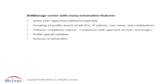Automatic grouping of profiles is a very important feature that allows you to view Bell Manage profiles based on your organizational structure. For example, you can do automatic grouping based on Active Directory OUs, IP subnet addresses, user names if you have a certain naming structure, or combinations of any of these. Anything within the Bell Manage profile can be used for automatic grouping.